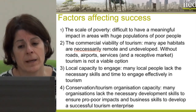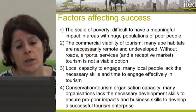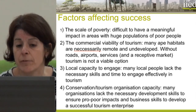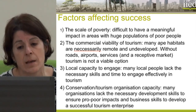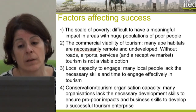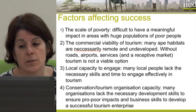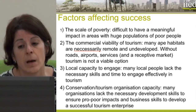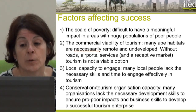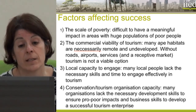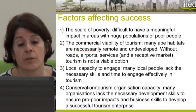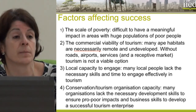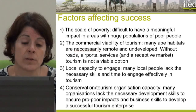The third issue is the local capacity to engage. You cannot assume that poor people have free time to engage in tourism enterprises — if it conflicts with their agricultural livelihood strategies, it is just not going to be viable for them. Apart from time, many local people also lack the necessary skills, such as language skills and basic training, to engage effectively in tourism enterprises.